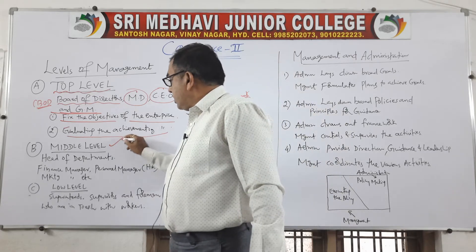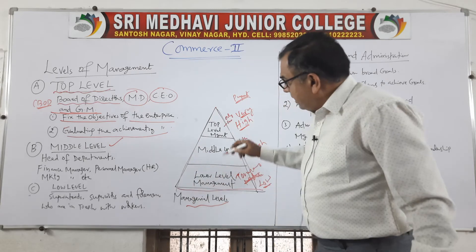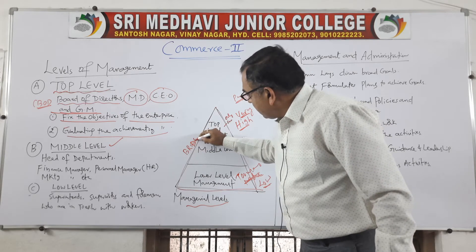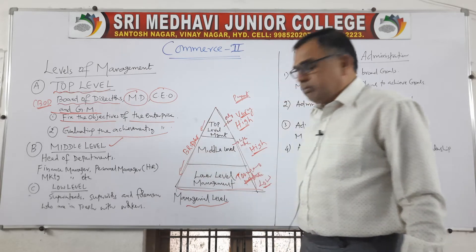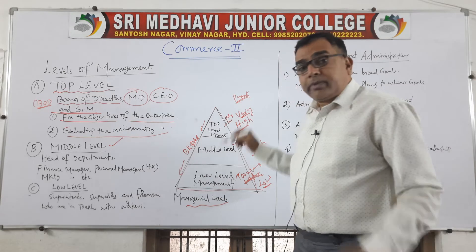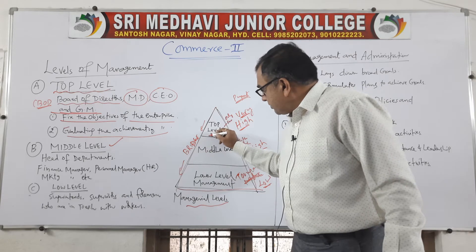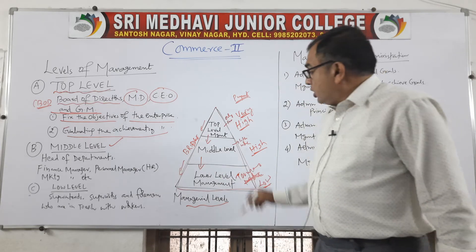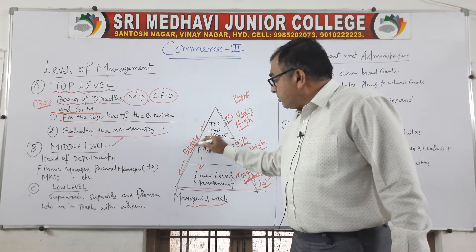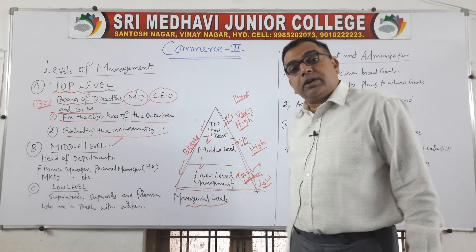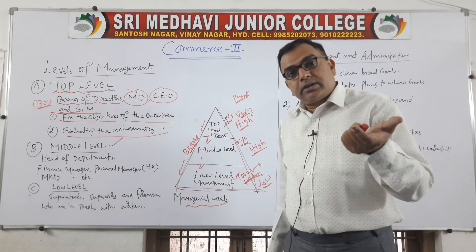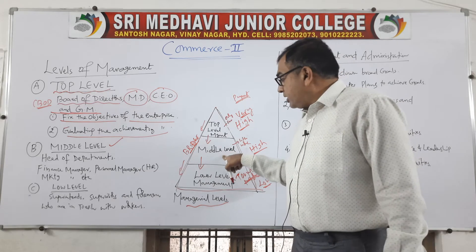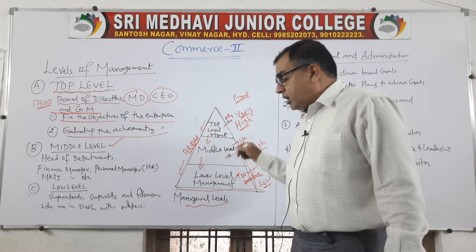Then comes the middle level. Middle level acts as a bridge between the top and lower levels. Whatever the top level management plans, these people will communicate — middle management receives the orders and communicates them to the lower level management. The responsibility of middle level management is to act as a communication bridge and to guide on how to implement the policies made by the top level.